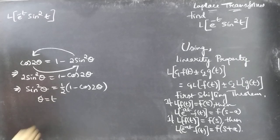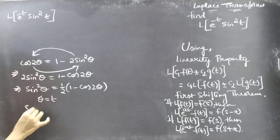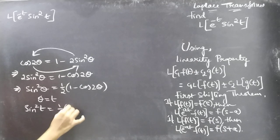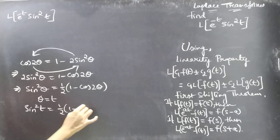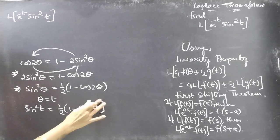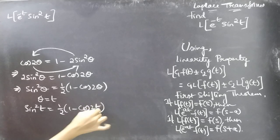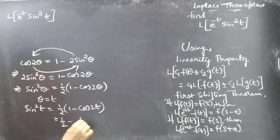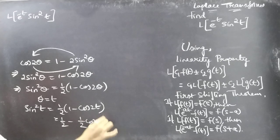Now for θ equal to t, just replace θ by t. Then you will get sine squared t equal to 1 by 2 into 1 minus cos 2t, or 1 by 2 minus 1 by 2 cos 2t.